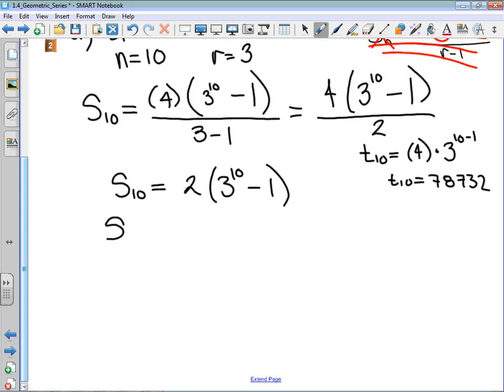I'm going to do this piece by piece. The sum of 10 terms is 2 times—3 to the power of 10 in my calculator is 59,049. I'm going to subtract 1 from that. So the sum is 2 times 59,048.